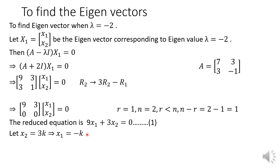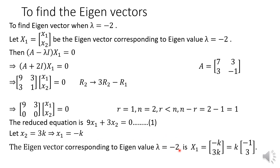We substitute a value for x2. If we take x2 = k, we get a fraction for x1. To avoid fractions, substitute x2 = 3k. Then 9x1 + 9k = 0, giving x1 = -k. So the eigenvector corresponding to lambda = -2 is x1 = [-k, 3k] = k[-1, 3], giving eigenvector [-1, 3].